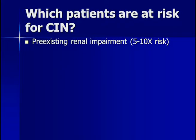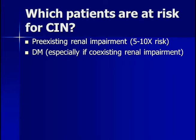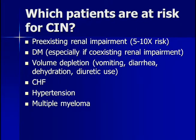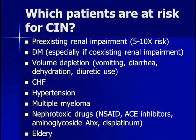Which patients are at risk for contrast-induced nephropathy? Pre-existing renal impairment is the biggest risk factor. Patients with underlying diabetes, especially with coexisting renal impairment, are at increased risk. Volume depletion due to vomiting, diarrhea, other causes of dehydration, or diuretic use also increases risk, as does congestive heart failure, hypertension, multiple myeloma, and use of nephrotoxic drugs such as NSAIDs, aminoglycoside antibiotics, and cisplatinum.